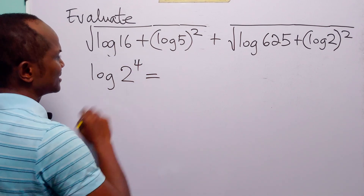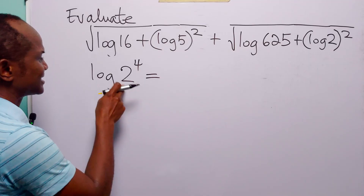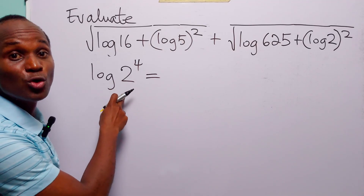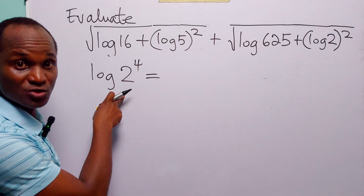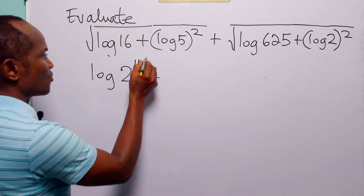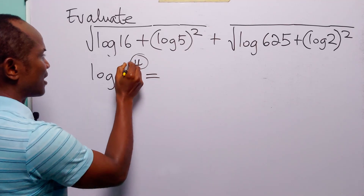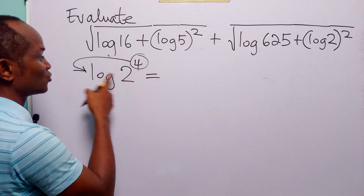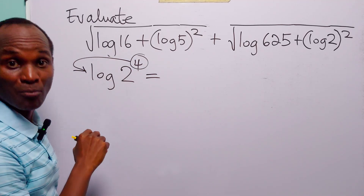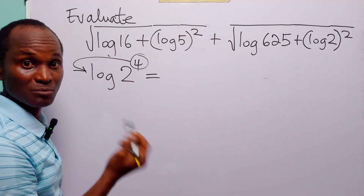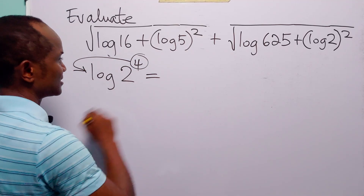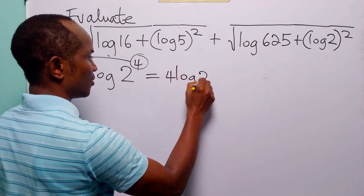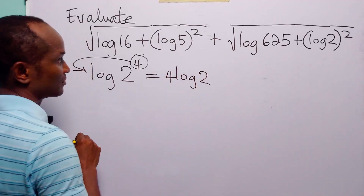The next thing we are going to do is apply the power rule of logarithms. We are going to bring down 4, the exponent of 2, to become a multiplier. When we do that, this becomes 4 times log 2.